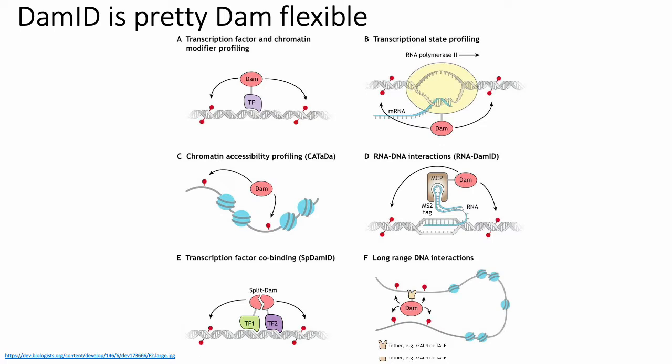DAMID is actually quite flexible and can be used for a wide range of assays. For example, you can fuse the DAM protein domain to any transcription factor that binds DNA, and thereby identify potential binding sites of any given transcription factor. This has all the limitations discussed with respect to creating fusion proteins between TFs and epitope tags used in ChIP-seq. Additionally, because DAMID only recognizes adenine in the GATC motif, you won't be able to identify binding sites of TFs that aren't near that GATC motif.